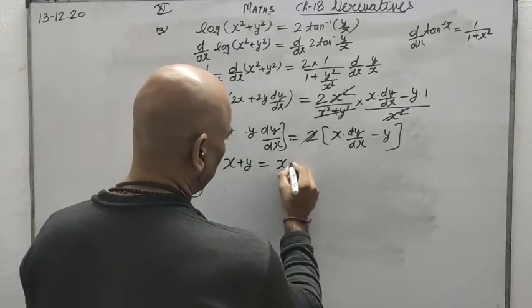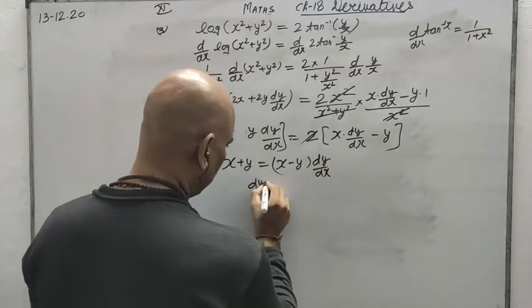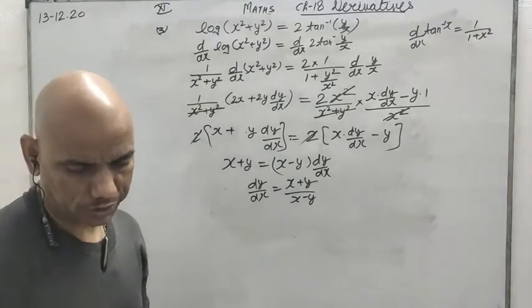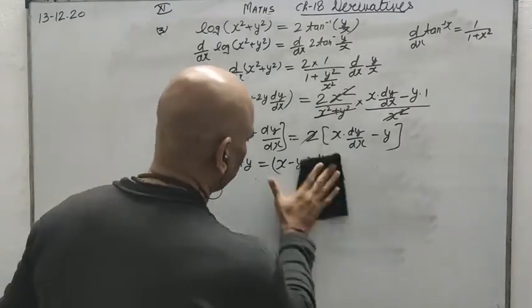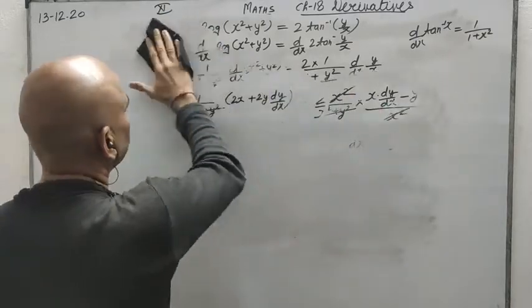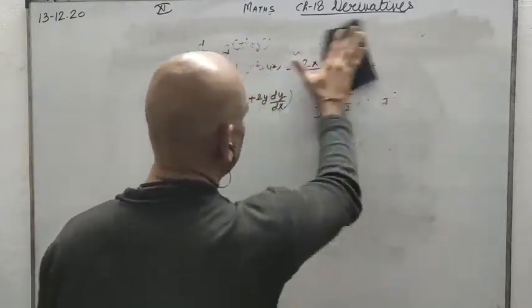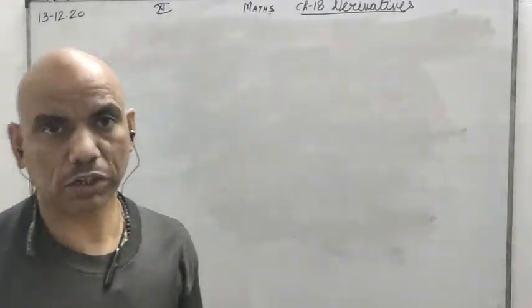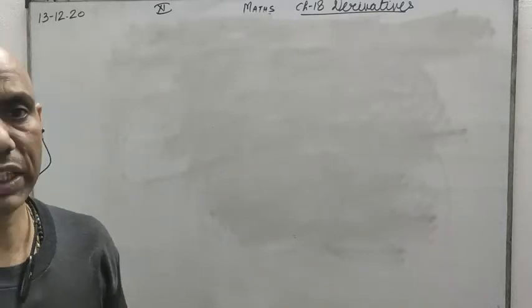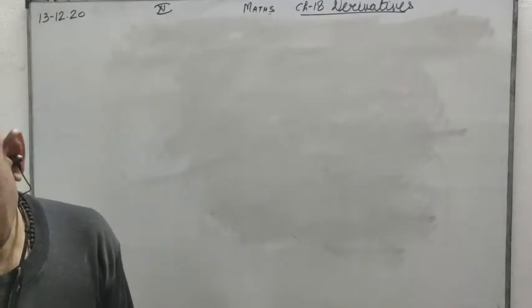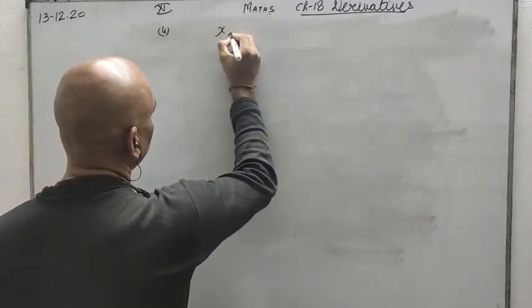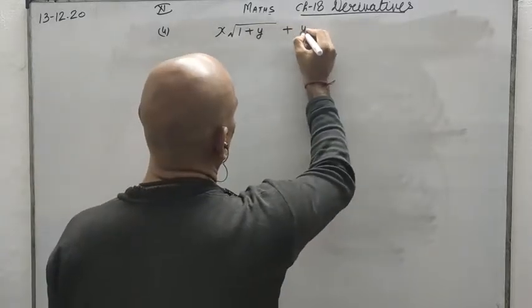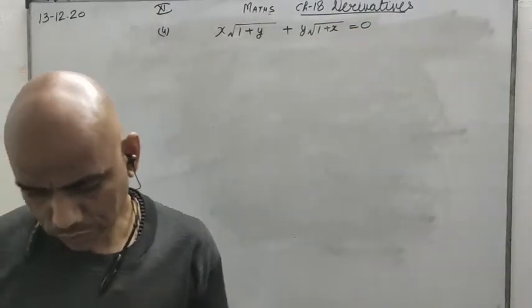So dy by dx equals (x plus y) upon (x minus y) — this is the answer for this question. Now, after this exercise, there are 3 more topics that are not part of your syllabus for this year, but will be useful later. The last question for your exam this year is: x(1 plus y) plus y(1 plus x) equals 0. You will have to find dy by dx.